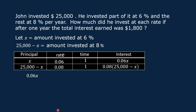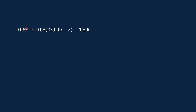Let us form the equation: 0.06X plus 0.08 times the quantity ($25,000 minus X) is equal to the total interest earned for one year, which was $1,800.